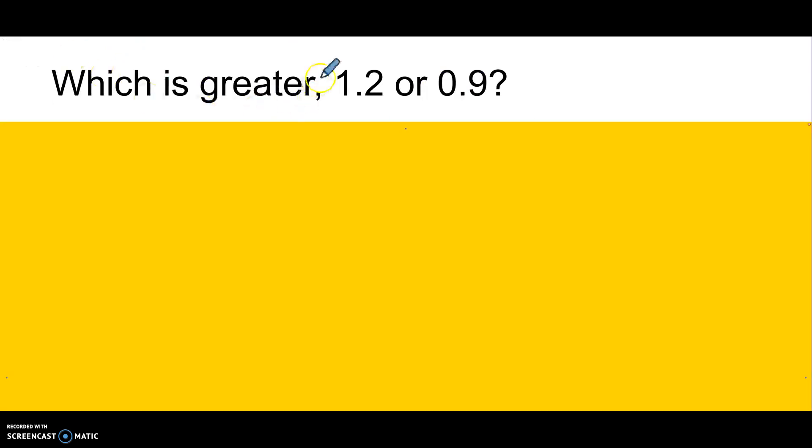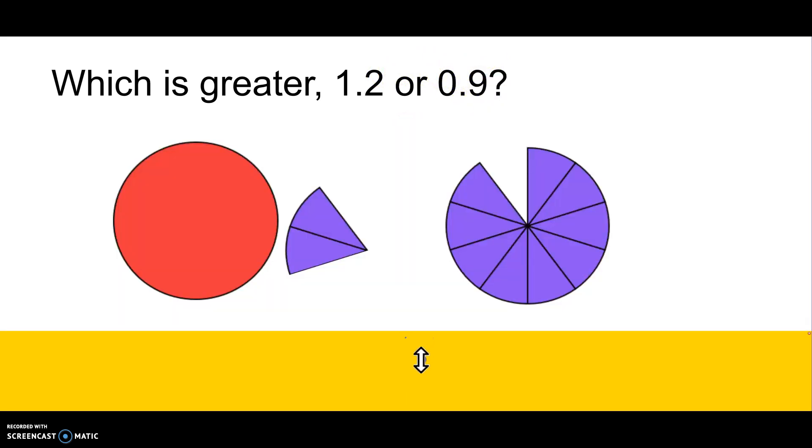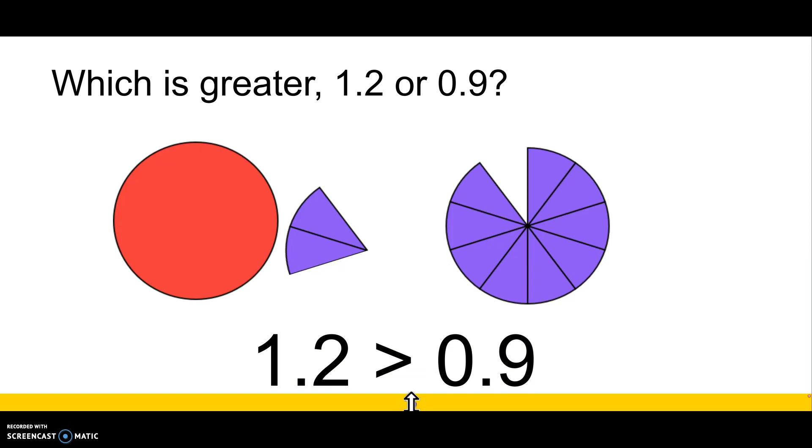Which would be greater? One and two-tenths or nine-tenths? So here I have my one whole plus two-tenths. One and two-tenths. And here I just have nine-tenths. I don't have any wholes. This is more. One and two-tenths is greater than nine-tenths.